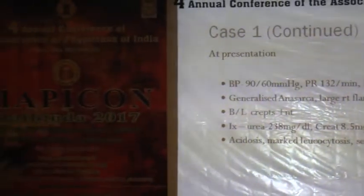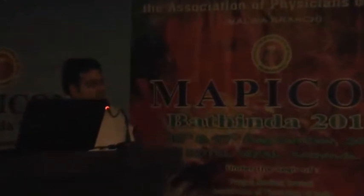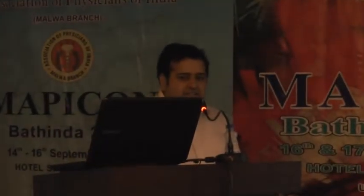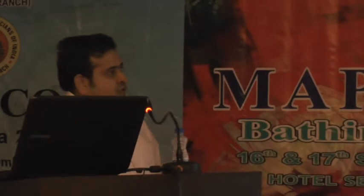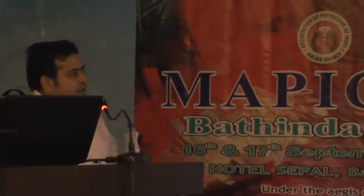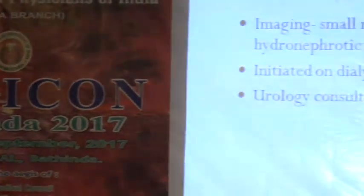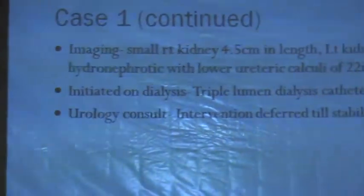On first assessment she has borderline low blood pressures, generalized anasarca, creps are present, and she has advanced azotemia with acidosis, marked leukocytosis, and severe anemia. We initiate her on dialysis with a triple lumen dialysis catheter. Imaging shows a very small right kidney and a left kidney which is grossly hydronephrotic with a lower ureteric calculus. We get a urology consult and plan that the intervention will be deferred until the patient is stabilized.